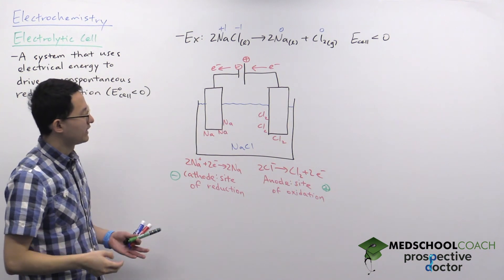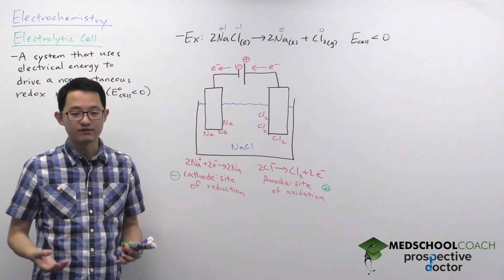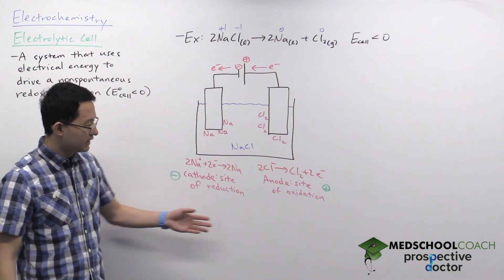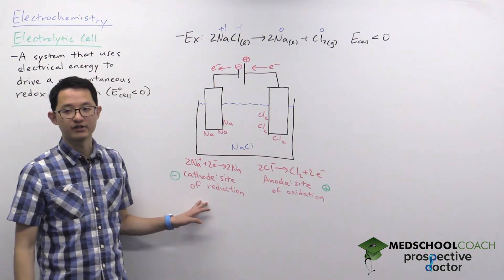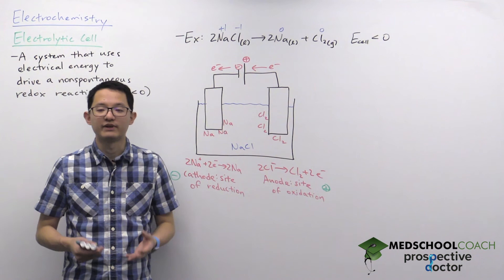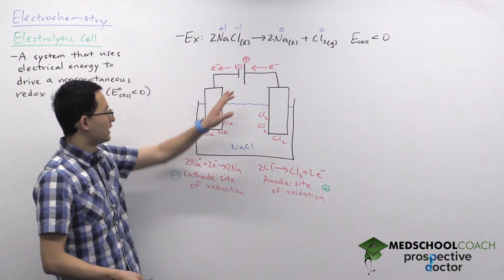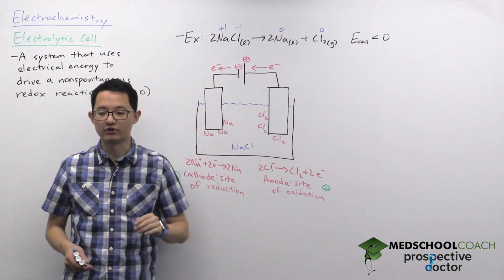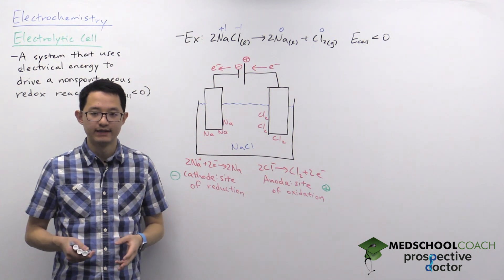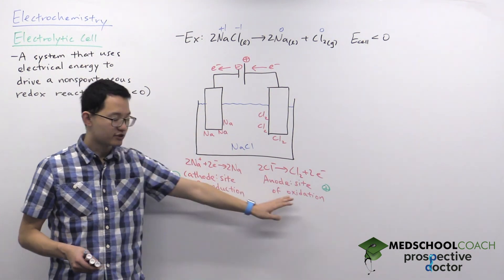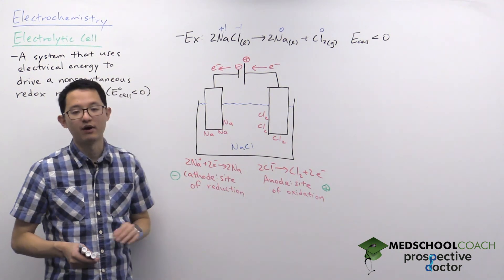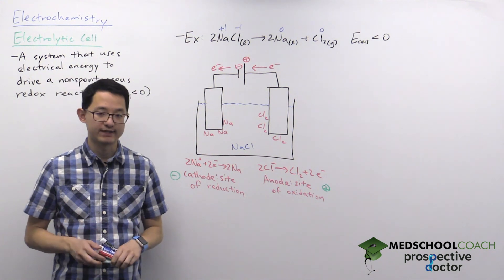This is how an electrolytic cell works. There appear to be many differences from galvanic cells, but actually not too many. In both galvanic and electrolytic cells, the anode is the site of oxidation, the cathode is the site of reduction, and electrons flow from anode to cathode. The main differences are: (1) electrolytic cells require an external voltage source; (2) electrolytic cells are non-spontaneous, galvanic cells are spontaneous; (3) in an electrolytic cell the anode is positive and cathode is negative, whereas in a galvanic cell the anode is negative and cathode is positive.